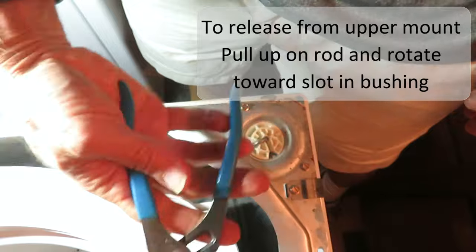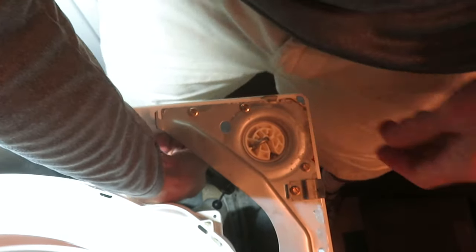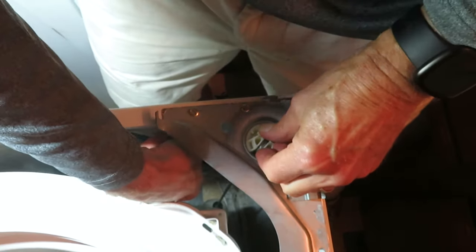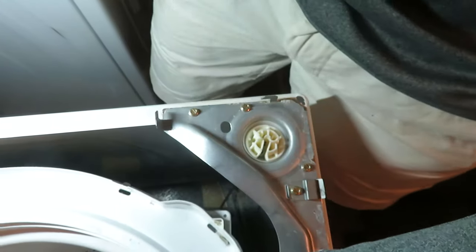Now you just reach down and I'm using a channel lock pliers and lift the rod up, pull it off the mount here, and then you just twist the bushing and bearing out until it fits through a slot and drop it down. I'll let go of it. It's going to fall to the floor.